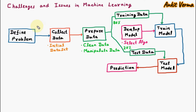Hello everyone, my name is Ankit Verma and today we are learning about challenges and issues in machine learning. In the machine learning process, first we define the problem, then we collect the initial data set. From that we prepare the data using data cleaning and manipulation, then we develop the model using some algorithm. 80% of the prepared data is taken as training data and 20% as test data. After doing the improvements, the model starts prediction.